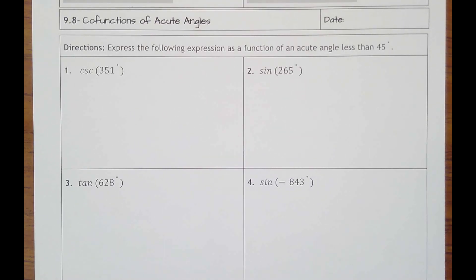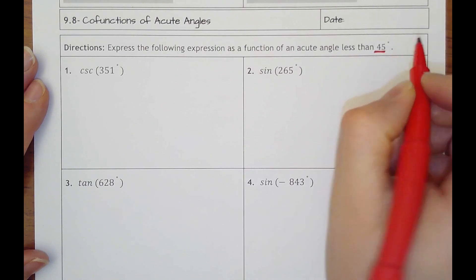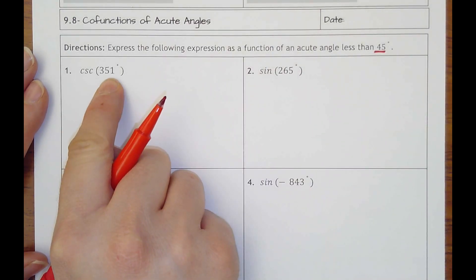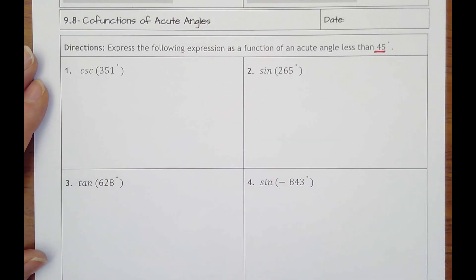Lesson 9.8, co-functions of acute angles. Directions say to express the following expressions as a function of an acute angle less than 45 degrees. So our job is to always make sure our final answer has an angle in here that's smaller than 45.